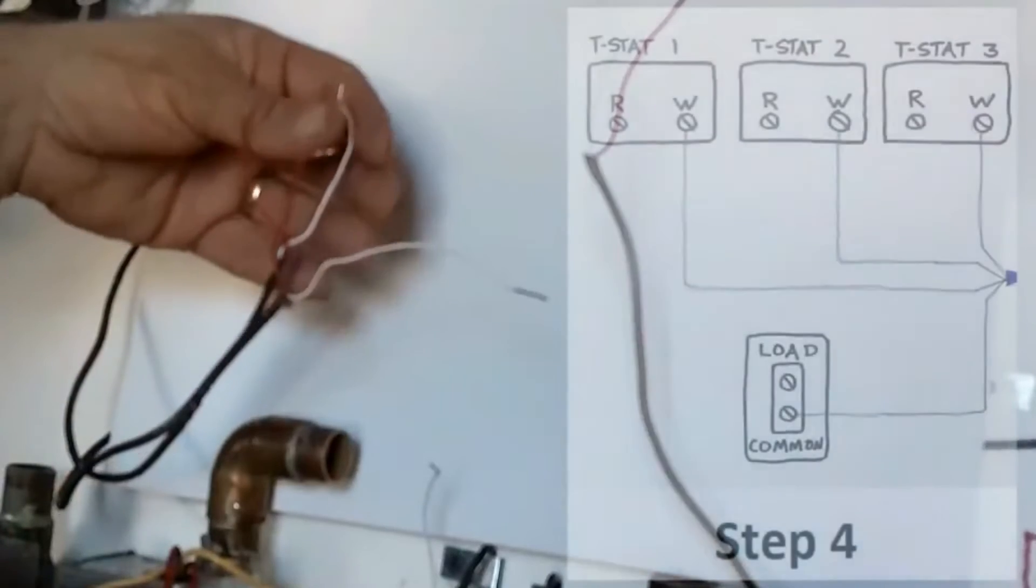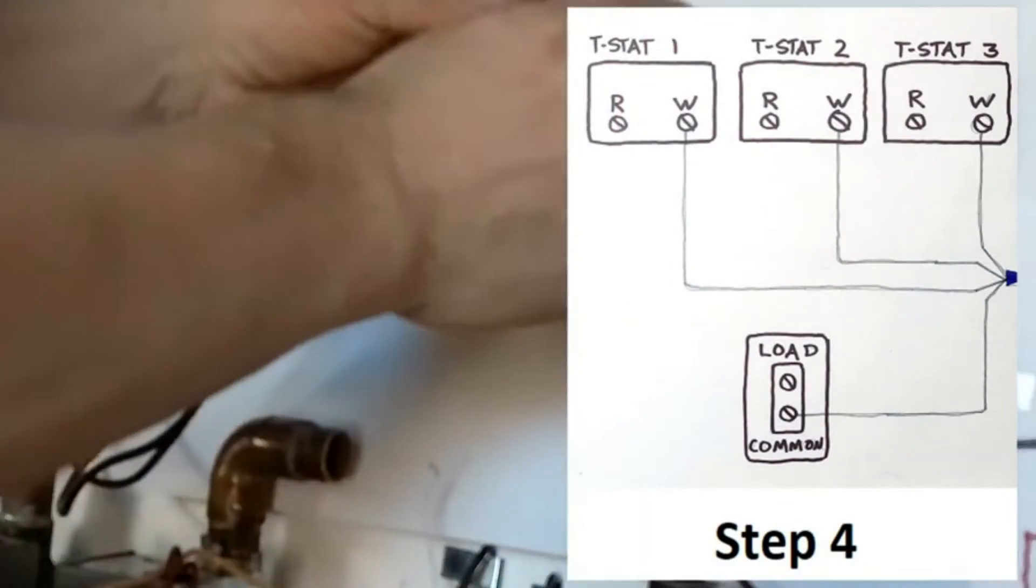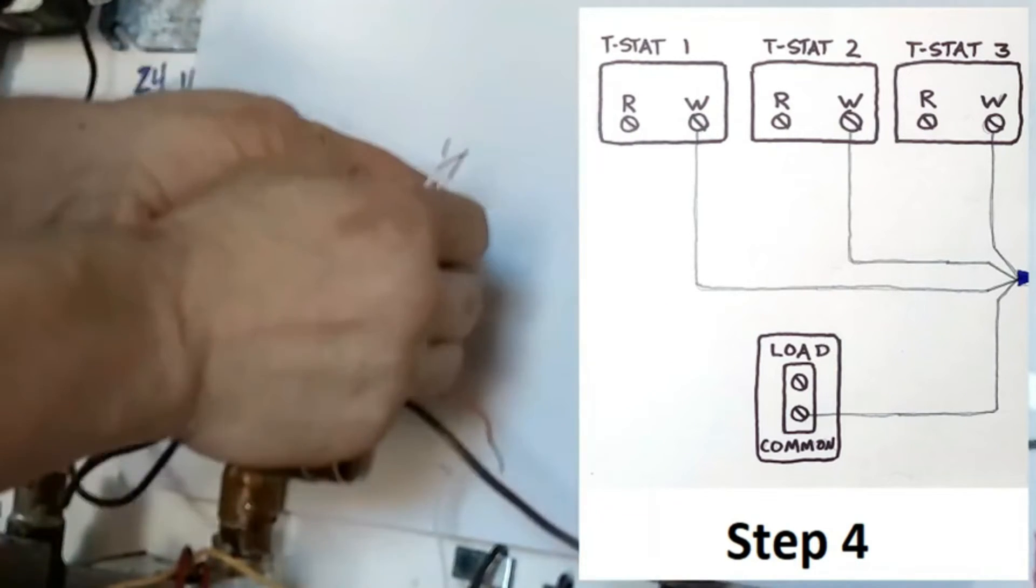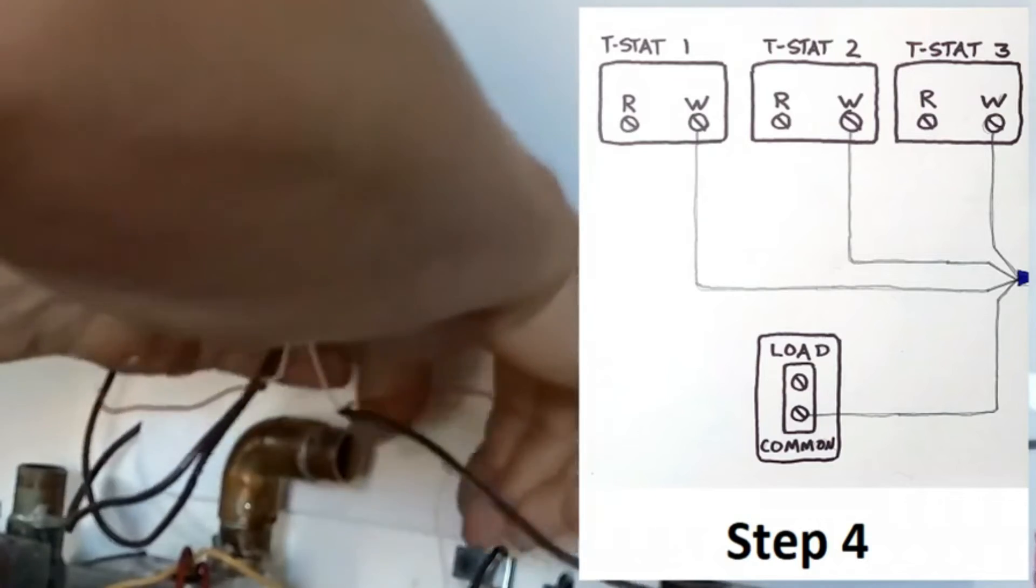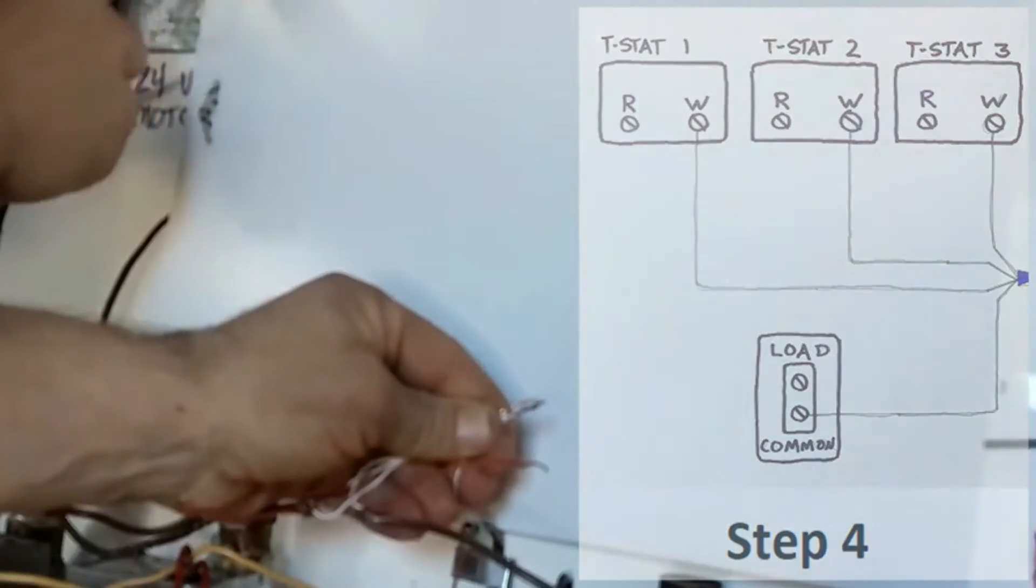Step four is to take the white wire from each one of your thermostats and bring those together. Now these are the wires that come back from the W terminal on your thermostat and these wires are going to connect to the white wire going back to your common on your external transformer.